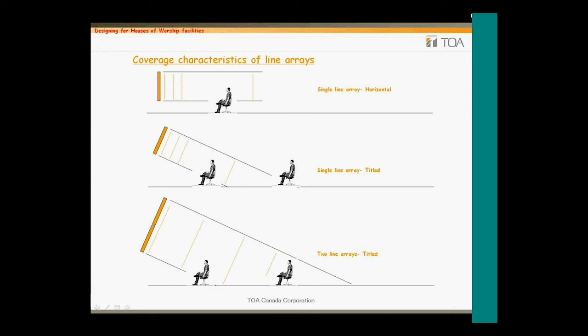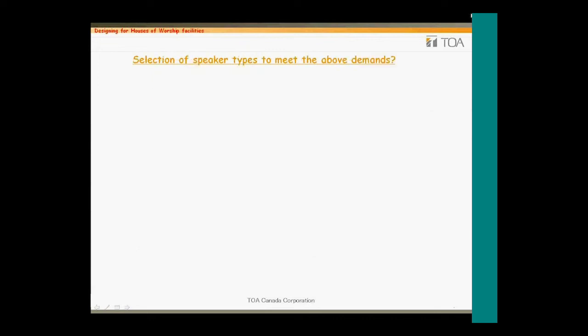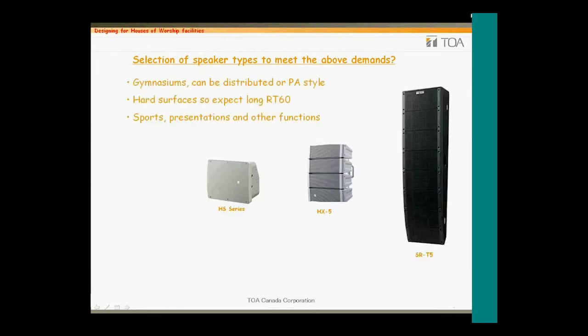For non-fixed arrays such as the HX5, SRC, and SRA, these types of arrays can be shaped to cover the near field as well as provide line array coverage to the back of the audience. We mentioned gymnasiums and how they could benefit from line array technology. The SRT5 is perfect for these, as well as the HX5 — they exhibit line array characteristics and are very rugged in design, able to take a direct hit from basketballs, with no need to cover them with metal cages. The HS series can be wall mounted and also used as floor monitors, as the cabinet is designed to tilt back and assume the typical floor monitor position.